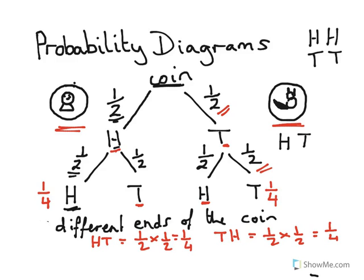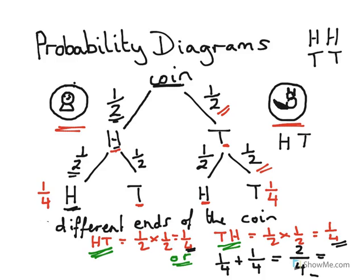But we could have got either of those outcomes — head-tail OR tail-head. Here's the key word: 'or'. When adding probabilities, we actually have to add the two probabilities together. The probability of head-tail was a quarter, and tail-head also a quarter. A quarter plus a quarter — same denominator, so we add the numerators: 1 plus 1 equals 2. The probability of getting different sides simplifies to one half.